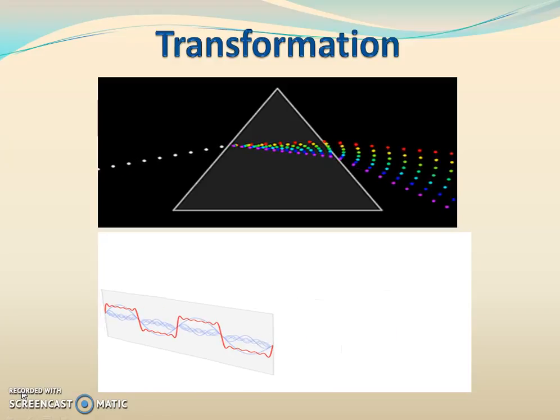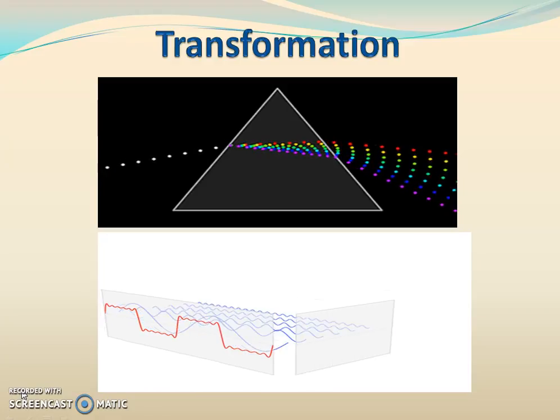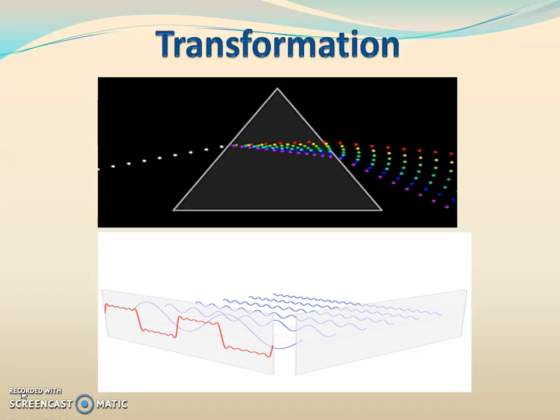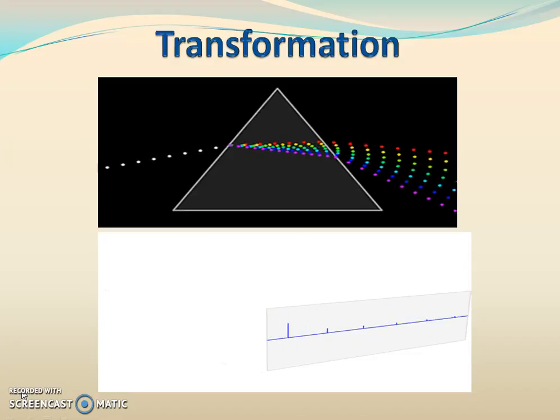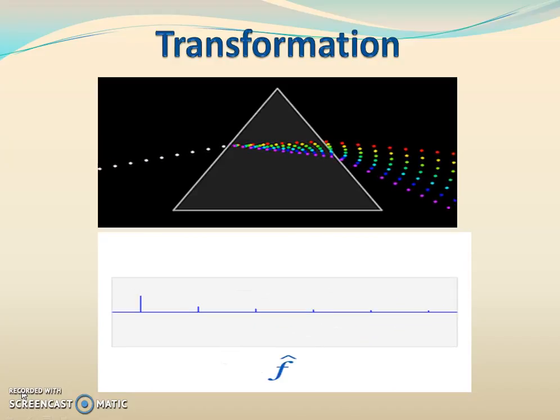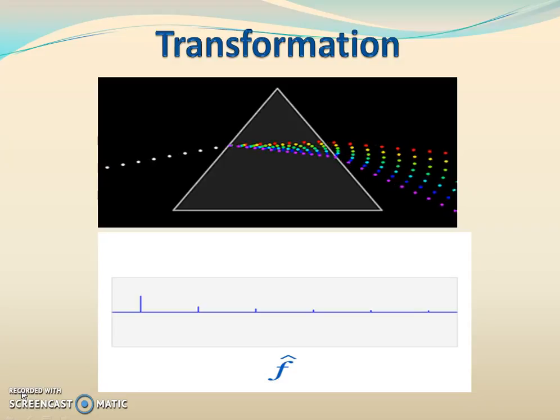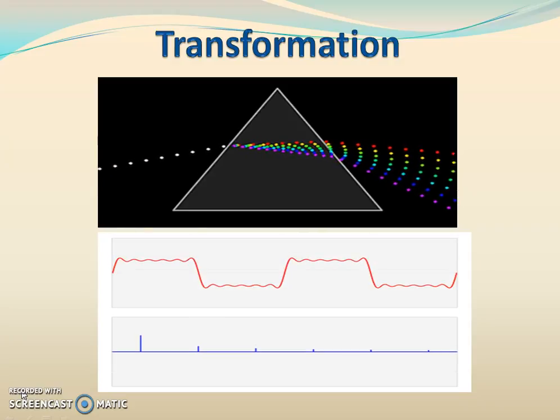If we observe the prism experiment, we all are familiar with prism experiment. White light, when passed through a prism, gets split into different seven colors, known as spectrum. White light is made up of different seven colors and each color corresponds to specific frequency of visible spectrum.